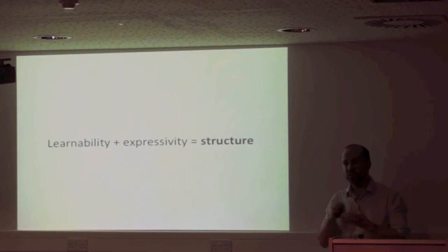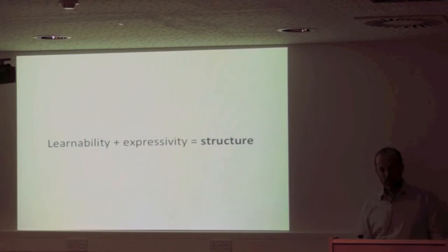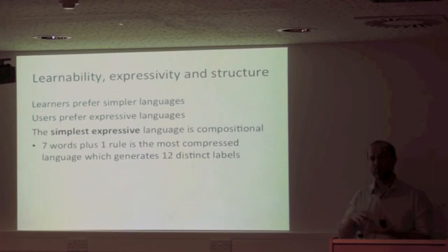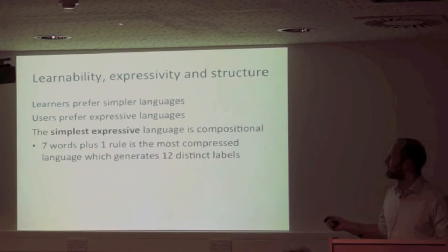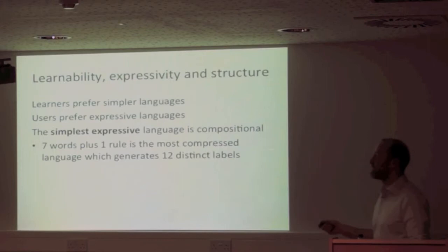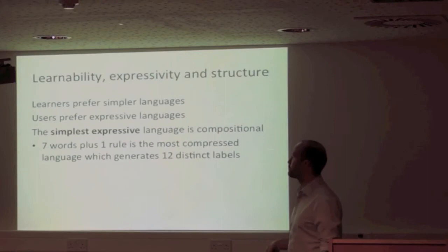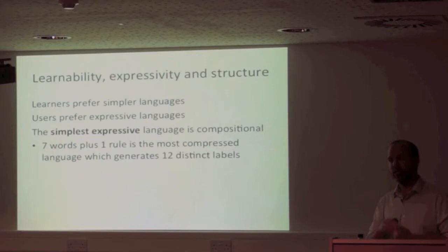Learners prefer simpler languages — a pressure for compressibility. But when using the language to communicate, you want it to be expressive. The language optimises both pressures simultaneously, and the solution is to be both simple and expressive. The kinds of languages that emerge are the simplest possible systems providing a distinct label for every referent — roughly seven words, four for fill pattern and three for shape, with one rule: combine them. That's the most compressed system generating twelve distinct labels.